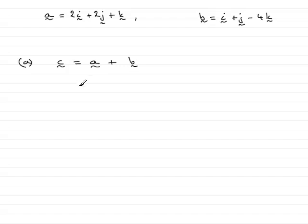So what we would need to do is just simply write a down. I prefer to write them down as column vectors actually. So that would be 2, 2, 1 plus the vector b, 1, 1, minus 4.